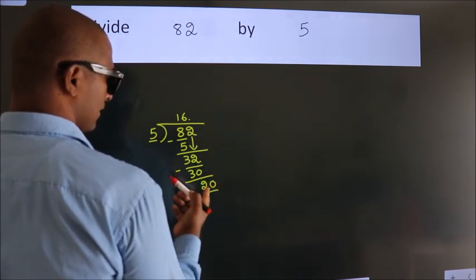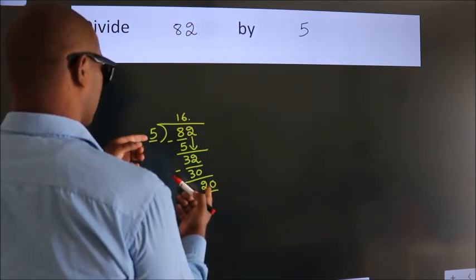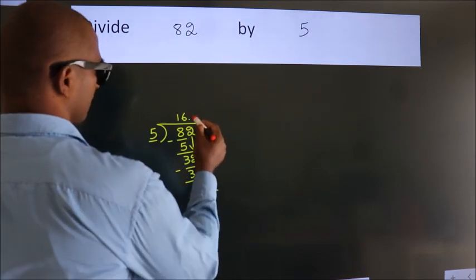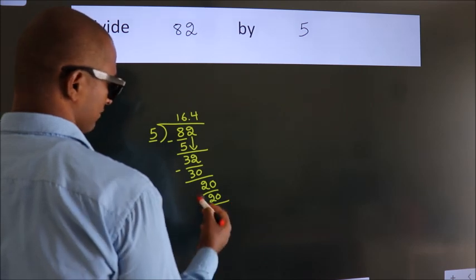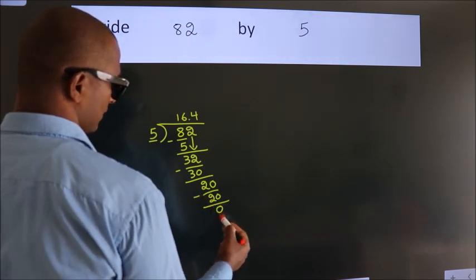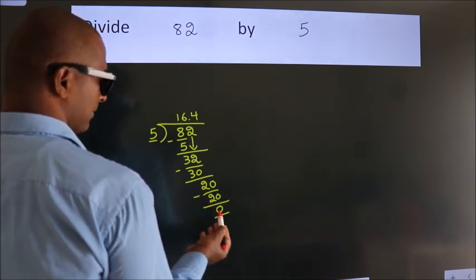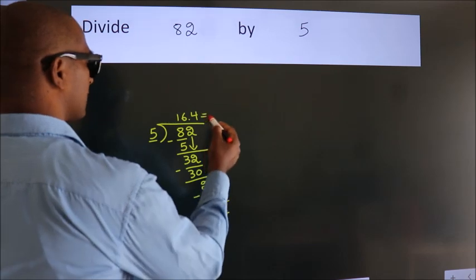So, 20. When do we get 20? In 5 table. 5 fourths, 20. Now, we subtract. We get 0. We got remainder 0. So, this is our quotient.